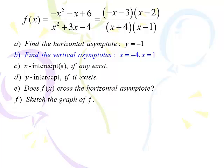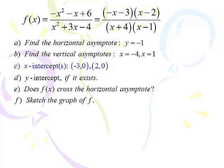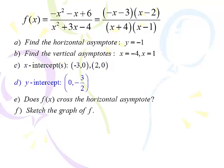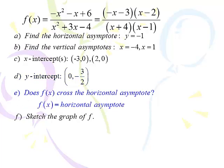Factoring the top and bottom — nothing cancels out. Looking at the bottom, I have (x+4)(x-1), so the vertical asymptotes are x equals negative 4 and x equals positive 1. X-intercepts: we want values of x that make the numerator zero. If x equals negative 3 or x equals 2, we get zeros in the numerator — those are where we cross the x-axis. For the y-intercept, put zero in for x: we get 6 over negative 4, which reduces to negative 3 halves. Y-intercept is at (0, -1.5).